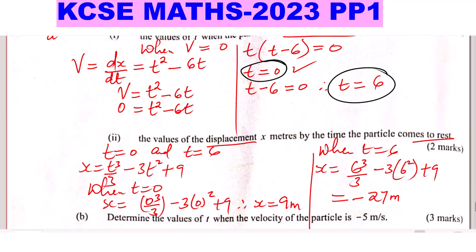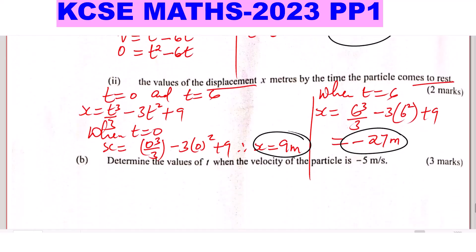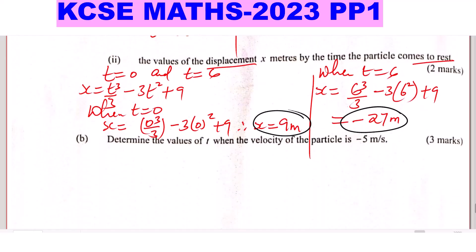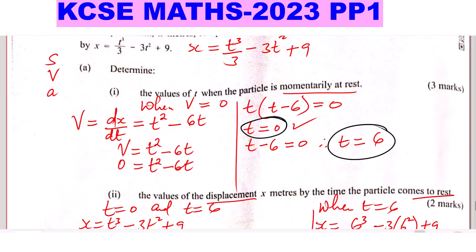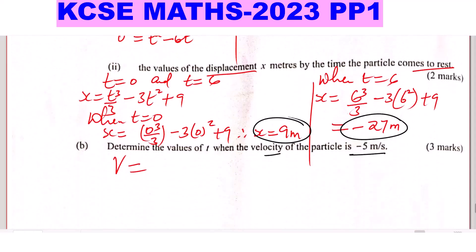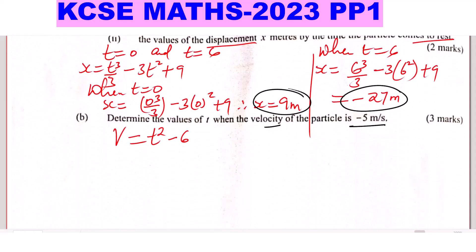So therefore, the values of displacement x when the particle comes to rest are 9 meters and negative 27 meters. Part B: determine the values of t when the velocity of the particle is negative 5 meters per second. We already have the expression for velocity from Part A. Velocity v equals t squared minus 6t. Now when v equals negative 5 meters per second, you just need to substitute.